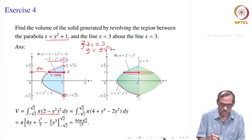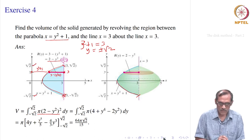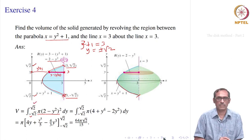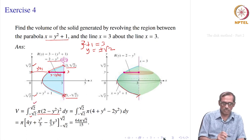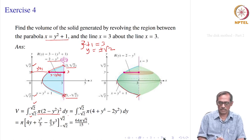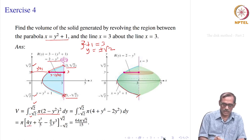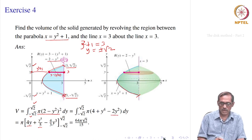So y ranges from −√2 to √2. The volume is the integral from −√2 to √2 of π times (2 − y²)² dy. Expanding: 4 + y⁴ − 4y². Integrating: 4y + y⁵/5 − (4/3)y³, multiplied by π and evaluated at √2 and −√2, then subtracted. Simplifying gives 64π√2 divided by 15 as the answer.